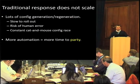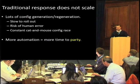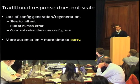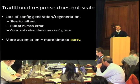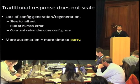The traditional response simply doesn't scale. If you have to log on and make a lot of config changes to your network in order to prevent an attack, that's slow to roll out and prone to human error. If you use better tools to automate that, you've got more time to do other things and less risk of human error.